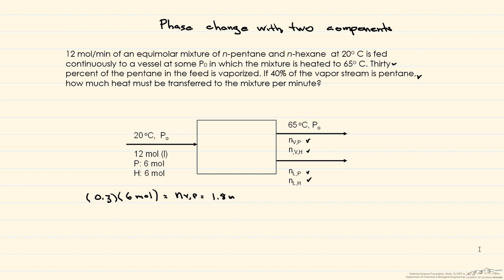The second thing that we're given is that 40% of the vapor stream is pentane, so 0.4 of the vapor stream is pentane, and we know that that's equal to 1.8 moles. Therefore, we know that the vapor stream is equal to 4.5 moles.